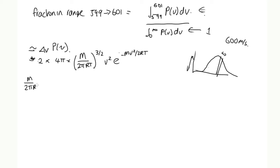m over 2πrt. m, we were told, was 0.0320 divided by 2π times 8.314. And t was 300. So solving this one, we end up with 2.0419 times 10 to the minus 6. So m over 2πrt to the 3/2 is equal to this to the 3/2, which is 2.92 times 10 to the minus 9 seconds cubed per metre cubed.